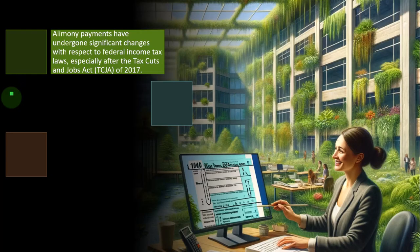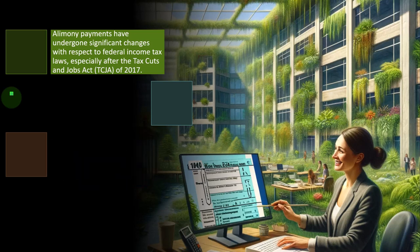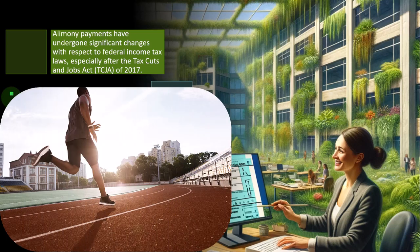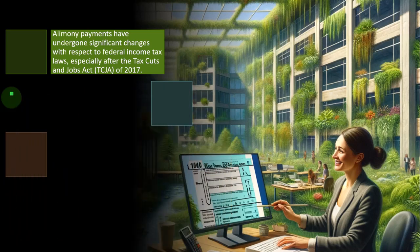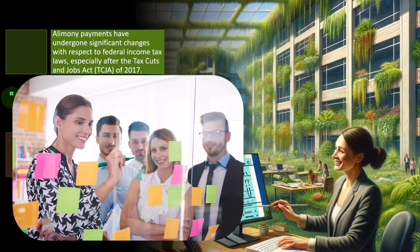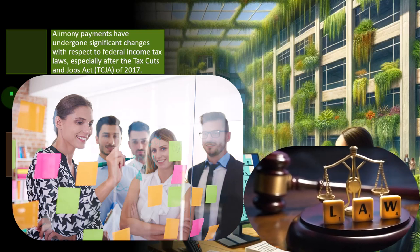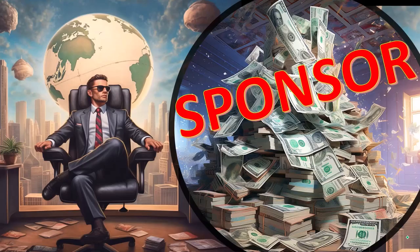First thing we want to note with alimony is there have basically been changes to it over time. Whenever there are changes to the tax law, often the problem is that you have to make the change from one point going forward because you don't want to retroactively mess up things that happened in the past. So what happens oftentimes is a law is made, it's put in place, people make plans based on that law, and then when you want to change it, possibly simplifying the code in the future becomes difficult.